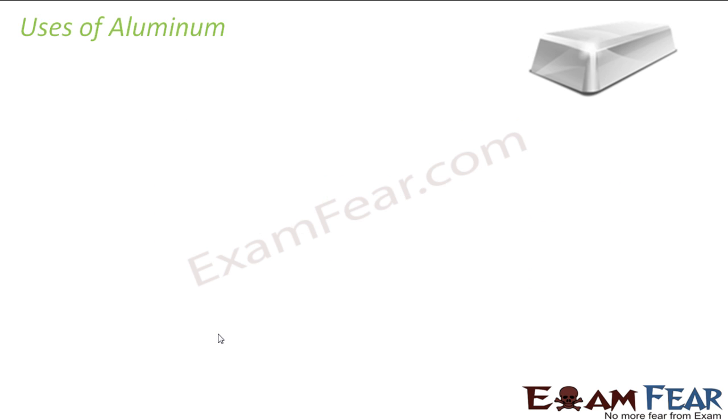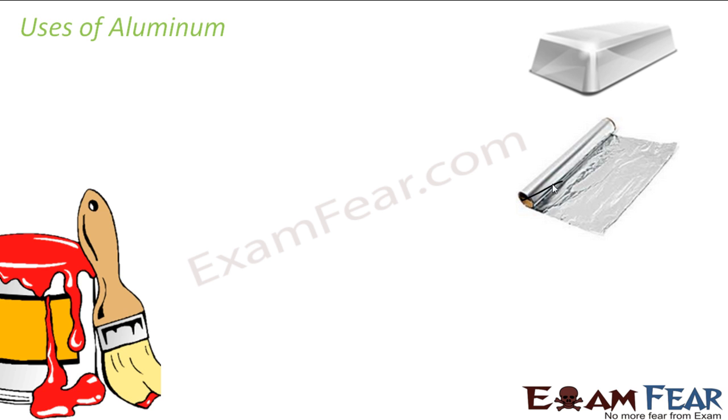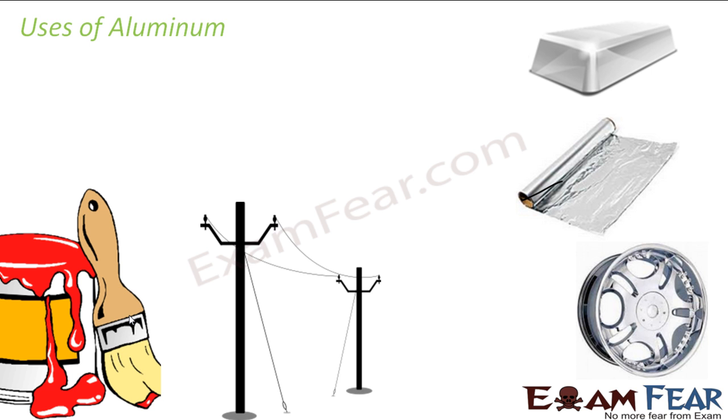Now we'll talk about the uses of aluminum. The uses of aluminum include aluminum foils, it is used to make paints, it is used for the extraction of chlorine and magnesium, it is also used for electrical wiring.